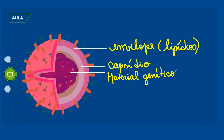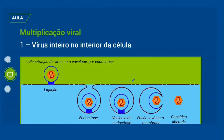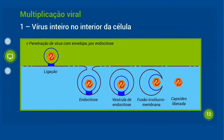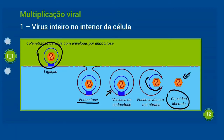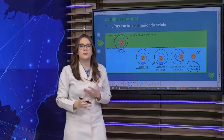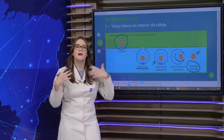O vírus pode se multiplicar de várias maneiras. Dentre as maneiras que ele pode entrar na célula, temos a penetração por inteiro — o vírus consegue entrar completamente na célula. Como isso ocorre? Por meio da endocitose, que é o processo de englobamento. A membrana da célula vai englobar o vírus totalmente, formando uma vesícula de endocitose. Essa vesícula vai se fundir com o envelope, liberando o capsídeo com o material genético dentro da célula.